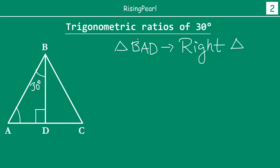Now what do we know about the sides? We know AB is A and AD is A by 2. Applying the Pythagorean theorem, we can find that BD is square root 3 over 2 times A, which we derived in the last webisode. Let's quickly verify this.